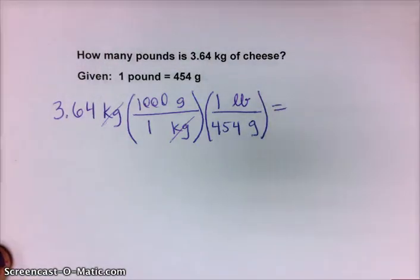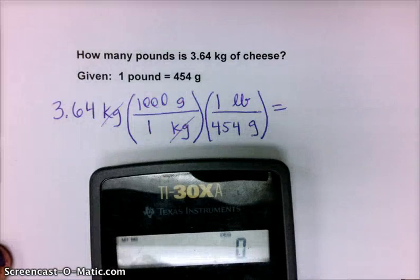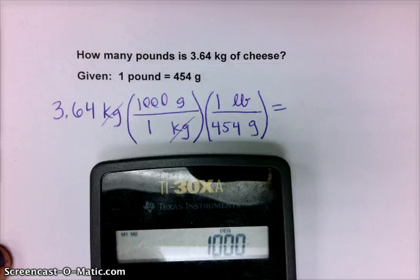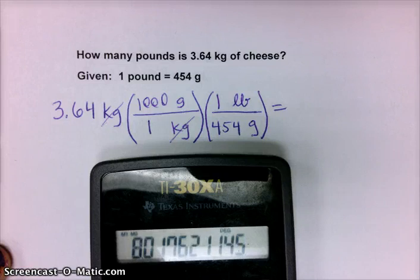And we're in pounds, so we're done. This was just a two-step conversion. So let's get our calculator. 3.64 times 1,000 divided by 1 times 1 divided by 454. Now we hit equals.